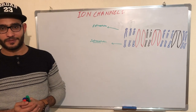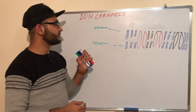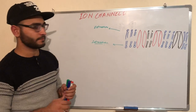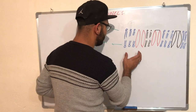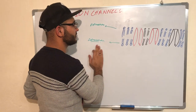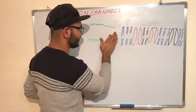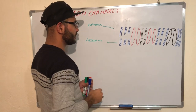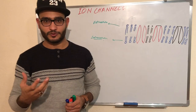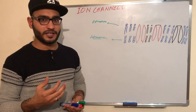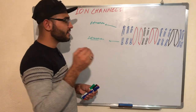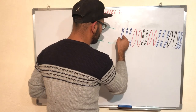Today our topic is about ion channels. Ion channels are channels through which ions can enter into a cell. Cell membrane is divided into extracellular and intracellular membrane, and is made up of the phospholipid bilayer. We have specific receptor hormones and ions in our body, and these hormones and ions can't enter through the phospholipid bilayer.